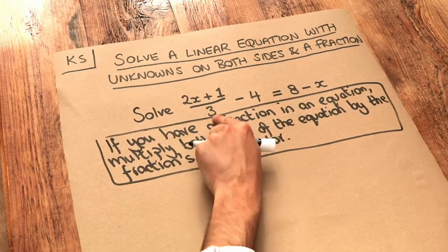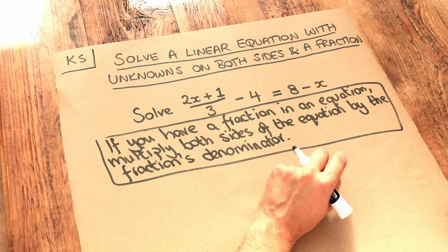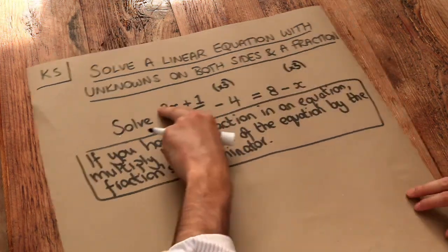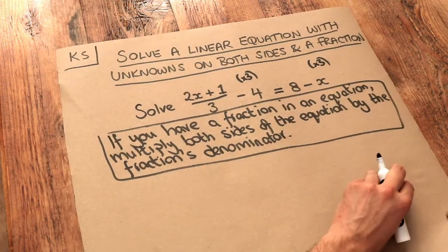So what's the denominator of this fraction? Well it's 3. So therefore we want to multiply both sides of this equation by 3. Everything on the left by 3, everything on the right by 3.